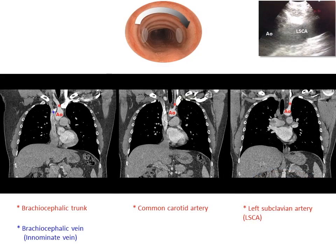At this level, while rotating the scope clockwise, you can appreciate the left subclavian artery emanating from the aortic arch. As you continue rotating the scope, you might be able to see the common carotid artery followed by the brachiocephalic trunk.